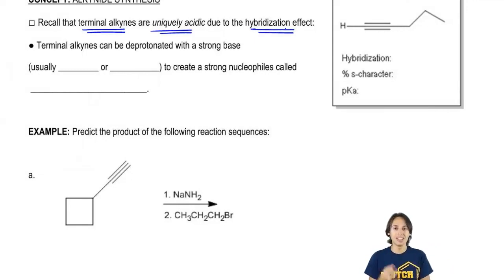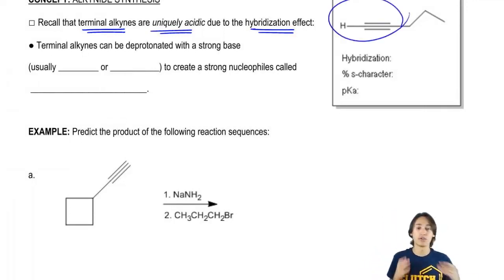When we talked about acids and bases, we talked about that there were basically five effects that made things more acidic. There was the element effect, inductive effect, resonance, solvation, and there was hybridization. I know this might be bringing back some bad memories for you guys or maybe you just completely have no clue what I'm talking about. But hybridization was one of the things that could make something more acidic. And here's an example of a terminal alkyne right there.